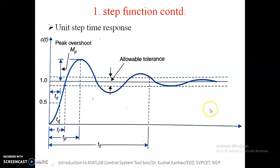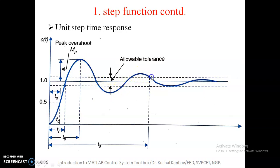The first function we are going to learn is the step function, and we are supposed to plot the unit step response or the time response for a closed loop control system. This is a standard underdamped response of a second order control system. At 1.0 you find a flat straight line — that is the input signal. The output response starts from 0, goes above 1, reaches a maximum value, then comes down below 1 and oscillates — it is an oscillatory response.